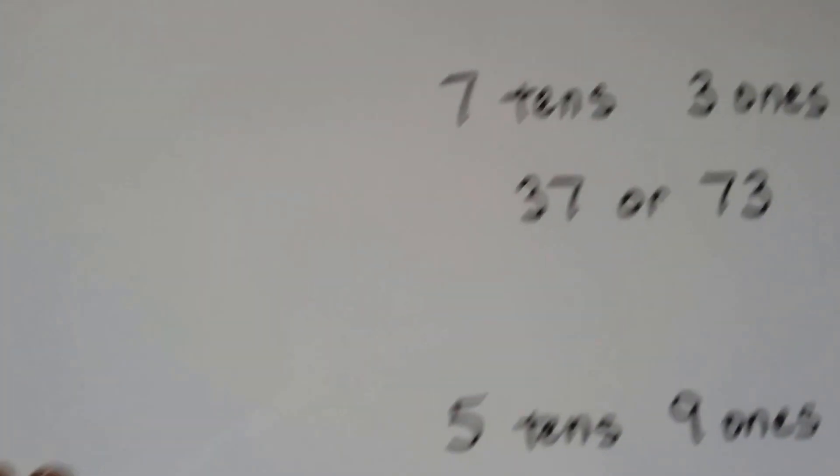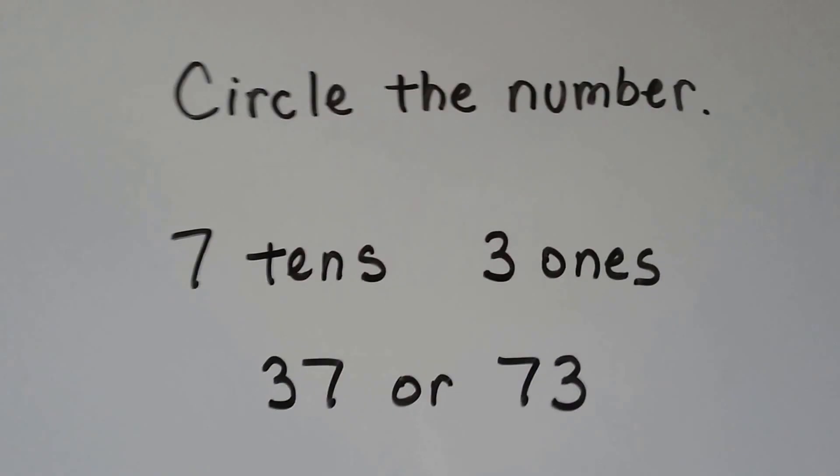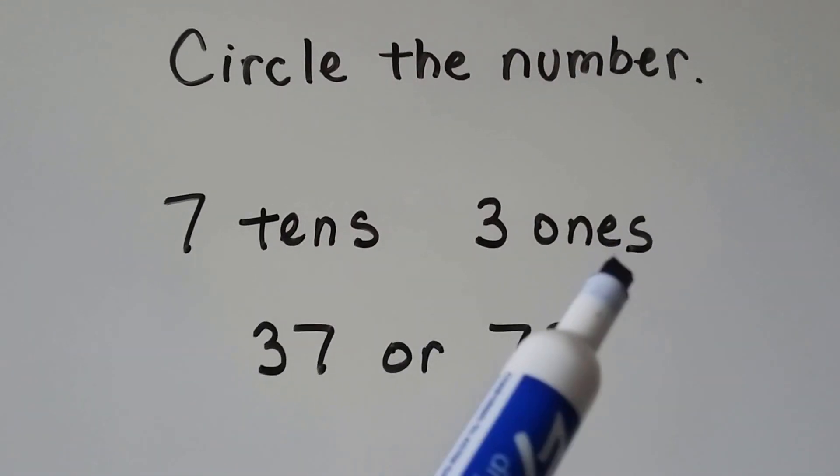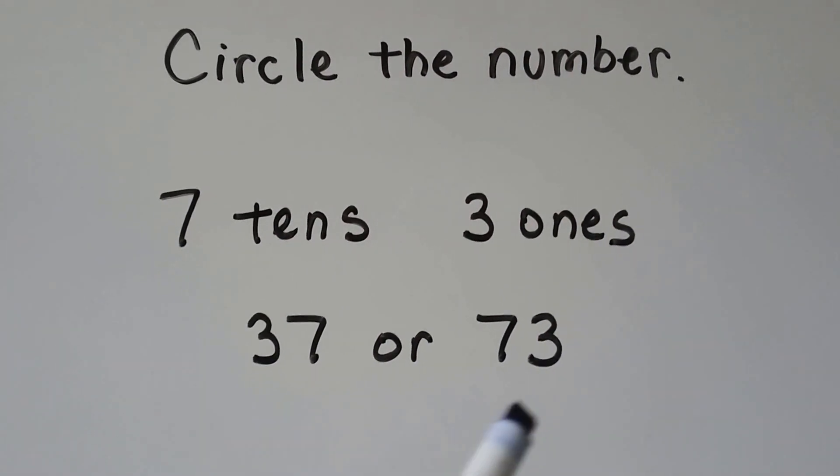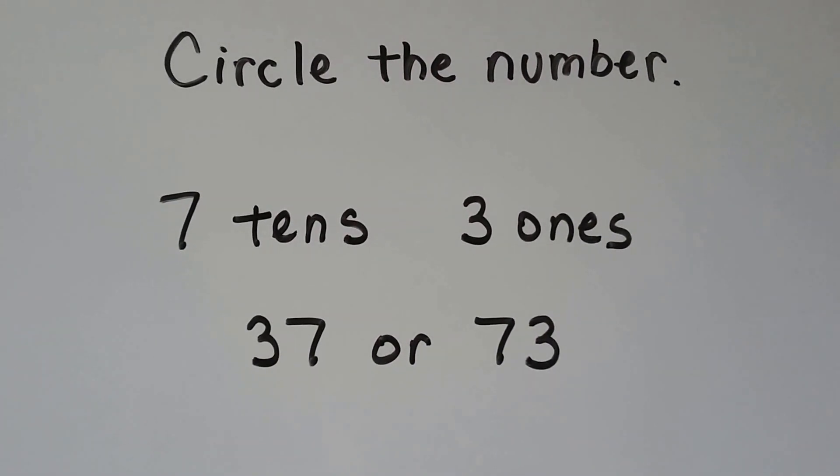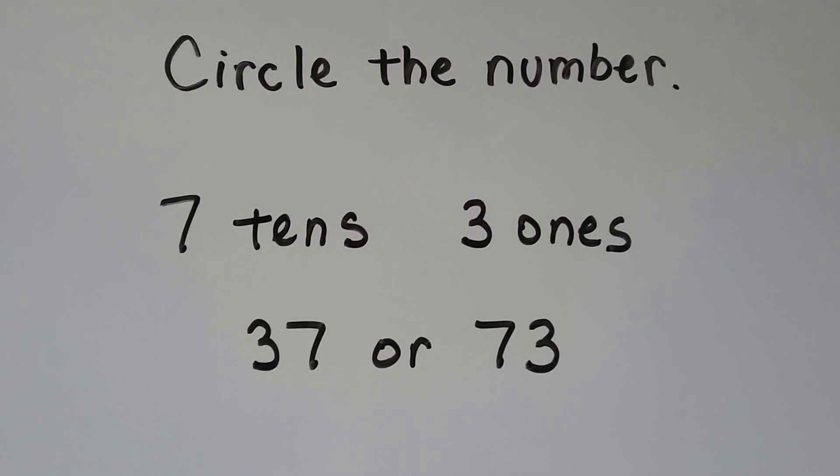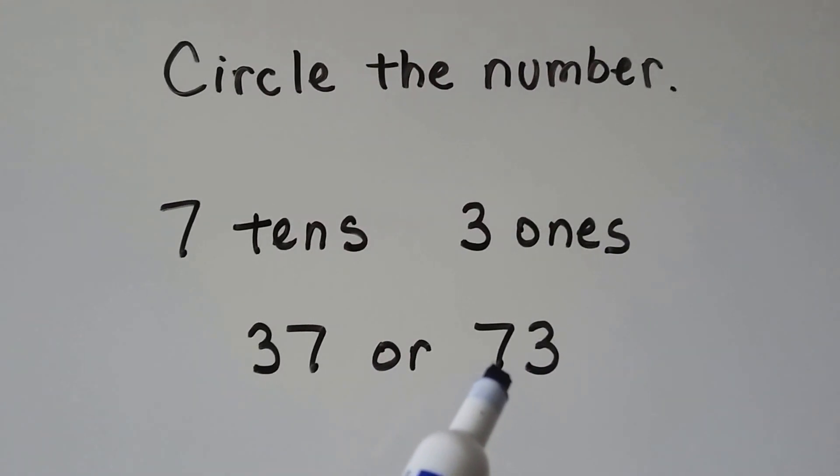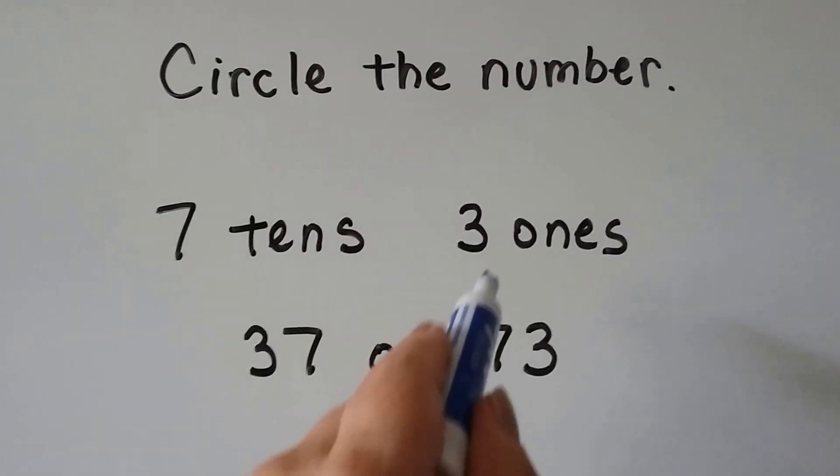Let's see if we can circle the correct number like we did in the last video. We have seven tens and three ones. Is it this number or this number? Well, we know the seven is in the tens place, and that's the tens place right here, isn't it? And that's the ones place. So if you said this one, you're right.